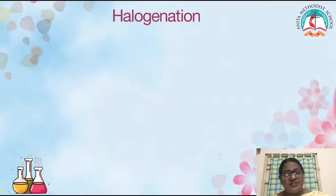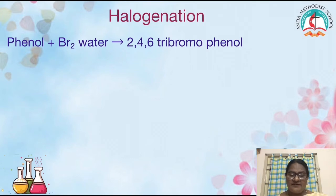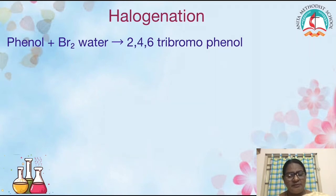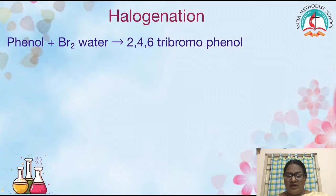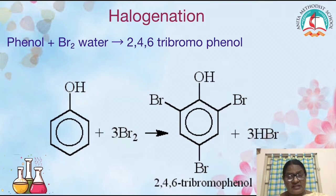Next, let us see halogenation. We know halogens — fluorine, bromine, chlorine, and iodine — belong to the 7th group. Phenol, when treated with bromine water (a reddish-brown liquid), has all three ortho and para positions replaced by bromine, forming 2,4,6-tribromophenol. This is a white precipitate, and this can even be taken as a test for phenol — immediately when phenol reacts with bromine water, we get a white precipitate of 2,4,6-tribromophenol. Both ortho positions and the para position are simultaneously substituted by bromine, just like picric acid is 2,4,6-trinitro, this is 2,4,6-tribromophenol.